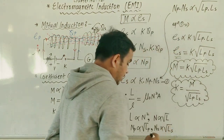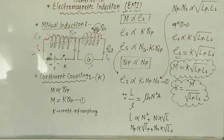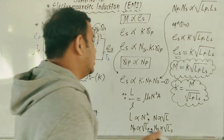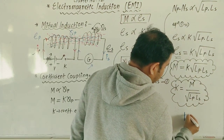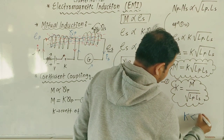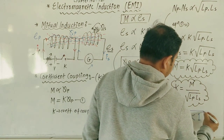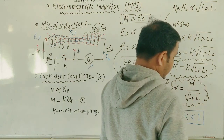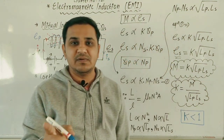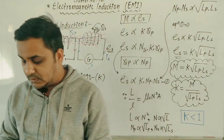An important point: the coefficient of coupling for two coils is always less than one. For any two coils, the coefficient of coupling should always be less than one.